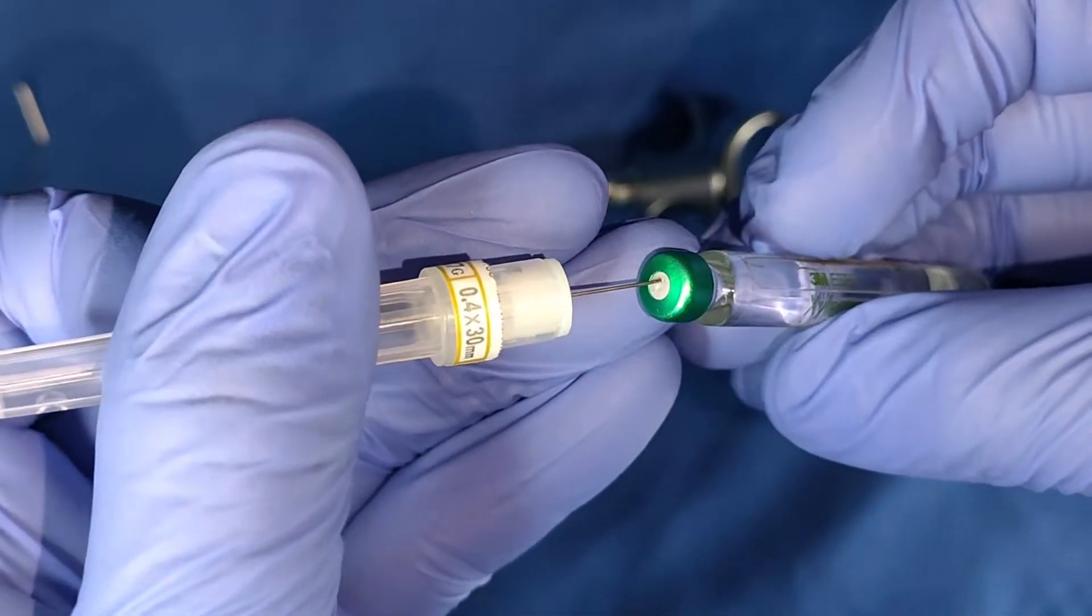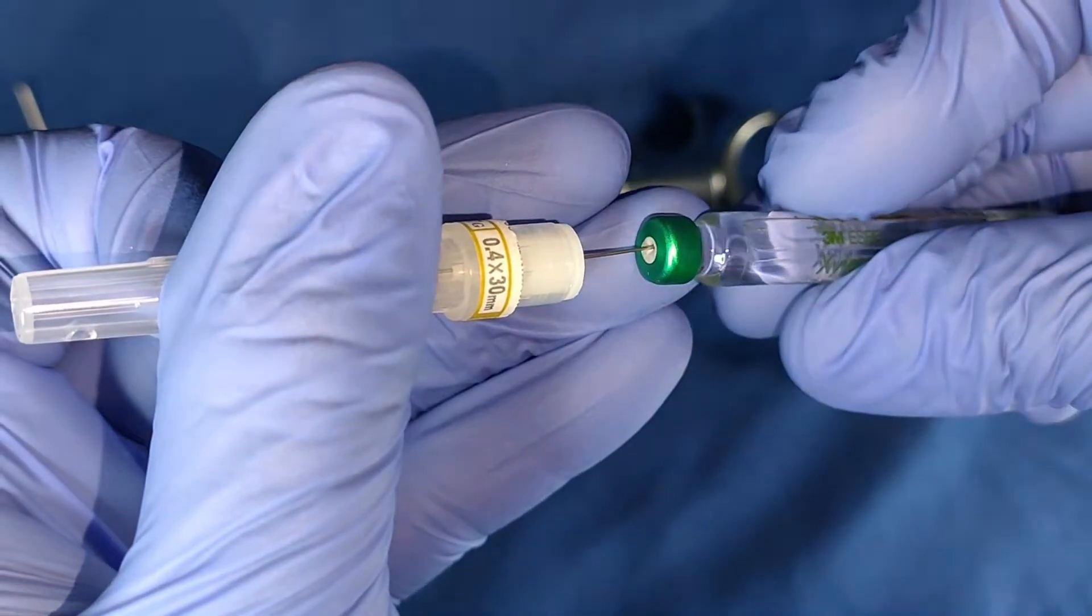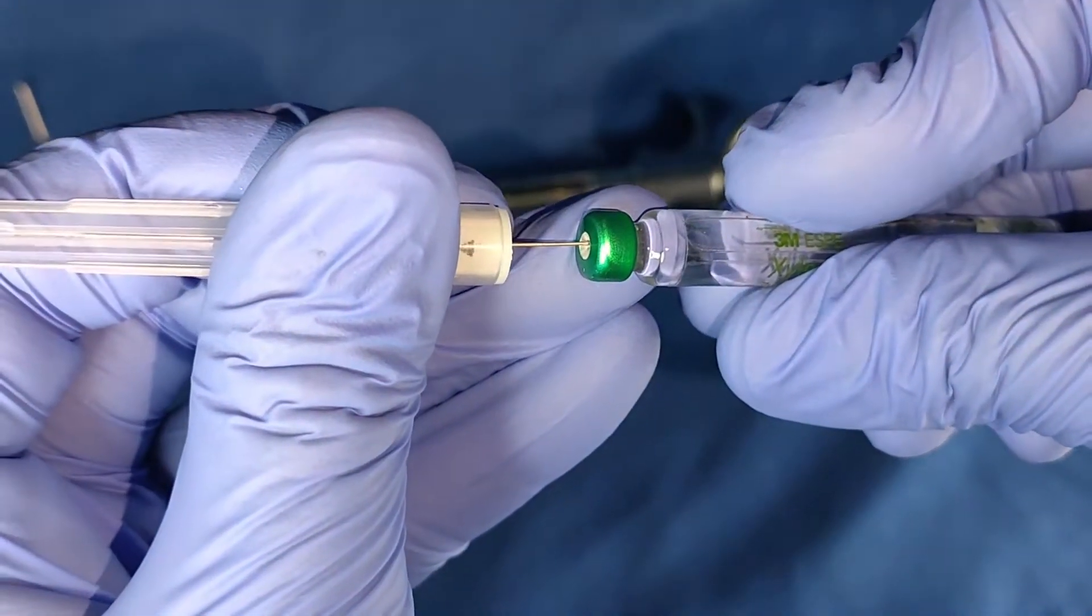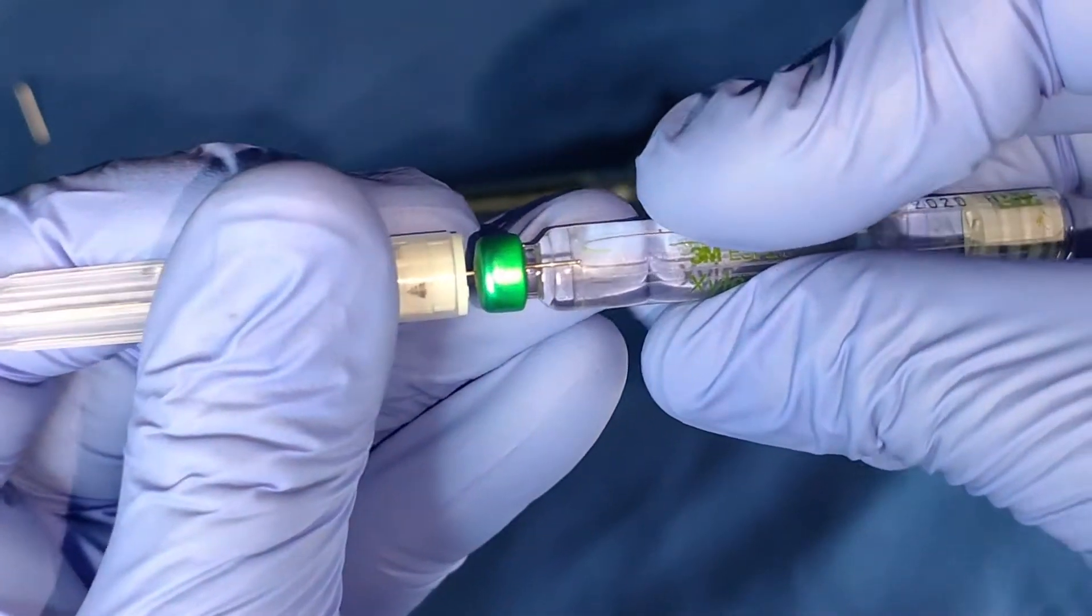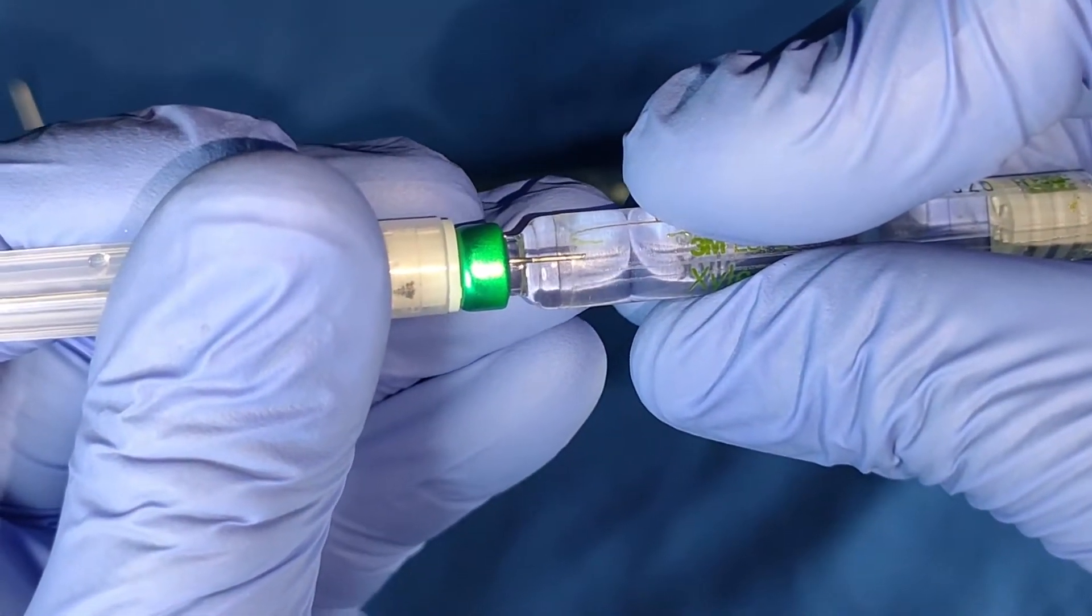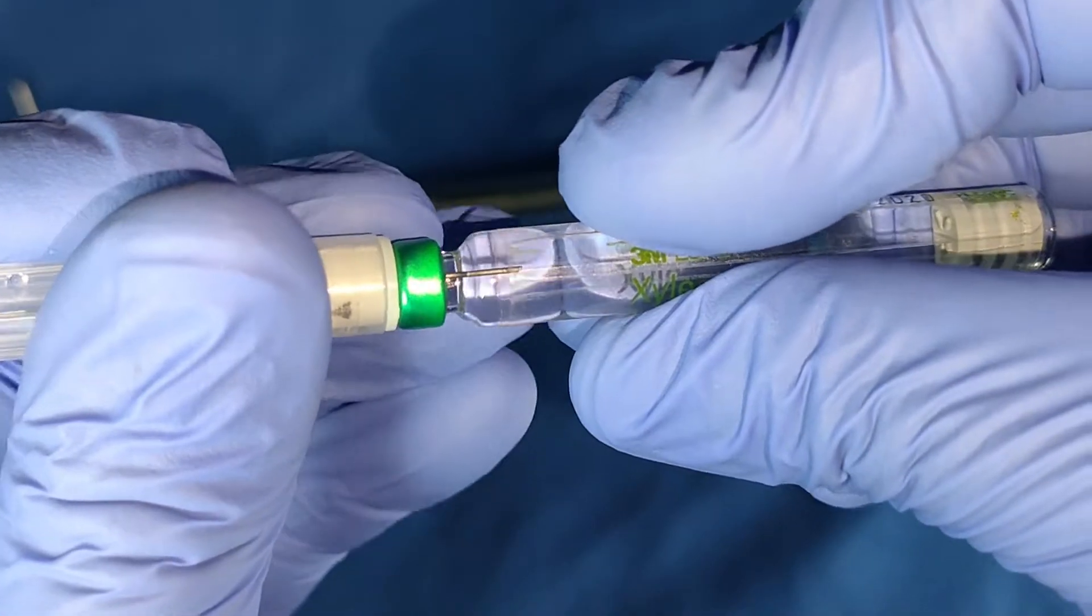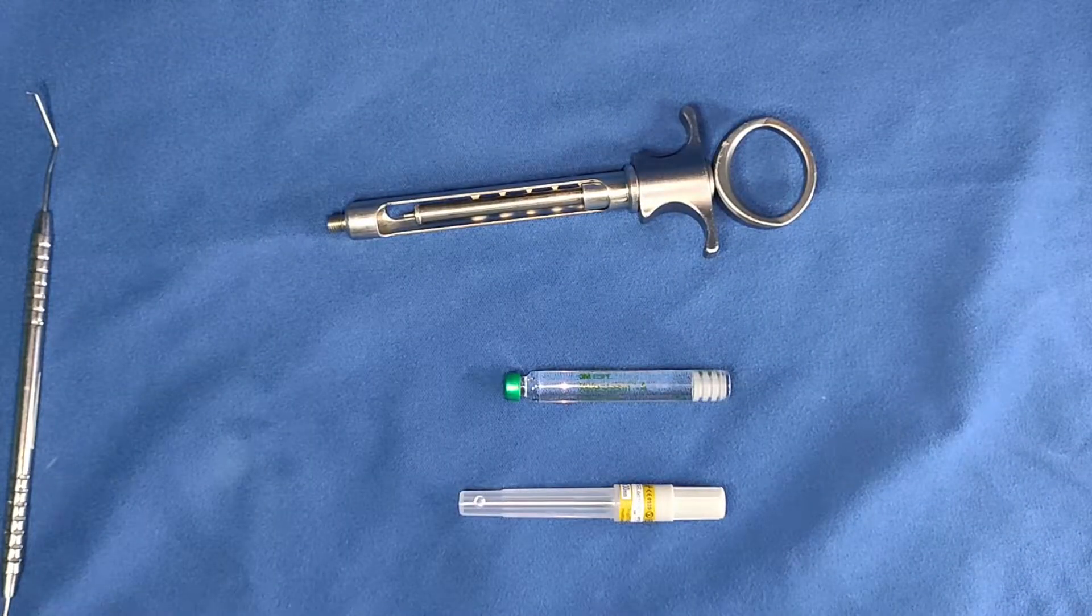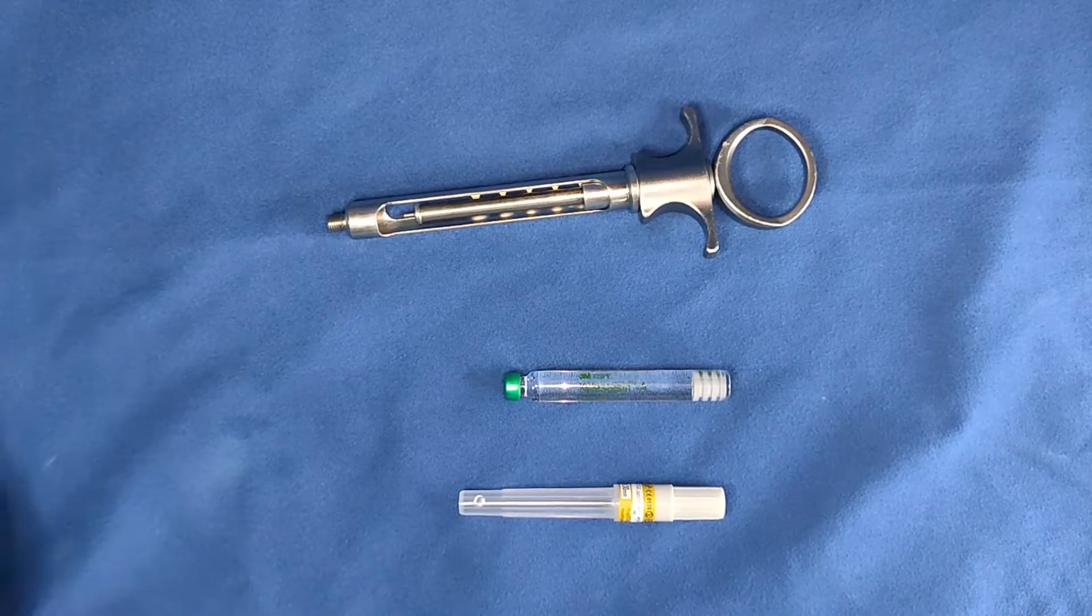This is the cartridge penetrating end of the needle. It will make contact with the rubber diaphragm later. I'll just show you what happens. Here we have the cartridge penetrating end inside the carpule. Now I'll show you how to assemble it properly.